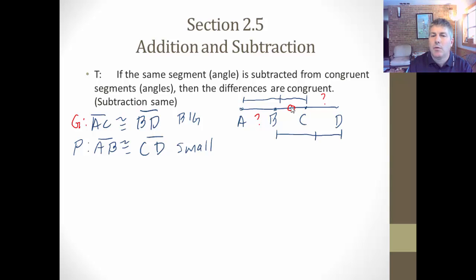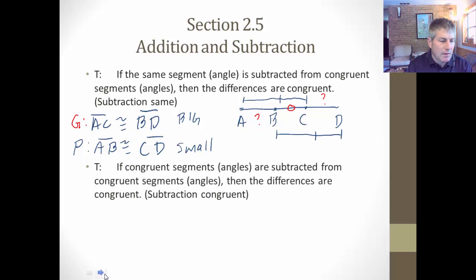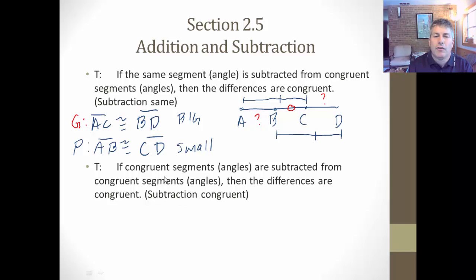In our proofs, we're going to talk about BC being reflexive. We'll make a statement that BC is congruent to BC by reflexive, and then apply subtraction. We can also subtract congruent segments or congruent angles: if congruent segments or angles are subtracted from congruent segments or angles, then their differences are congruent. This is going to be called 'subtraction congruent' — that's the reason you would use in proof.